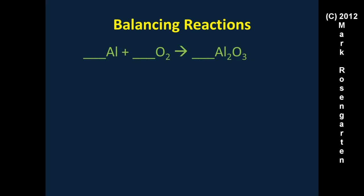Example three: aluminum and oxygen form aluminum oxide. We have one aluminum on the left and two on the right, so we put a two in front of Al. We have two oxygens on the left and three on the right. When faced with this, multiply the two numbers together to find the lowest common denominator: two times three is six. So we'll have six oxygens on both sides when done. Three goes in front of O₂ (three times two = six), and two goes in front of Al₂O₃ (two times three = six). That gives four aluminums on the left, so we change the aluminum coefficient to four.